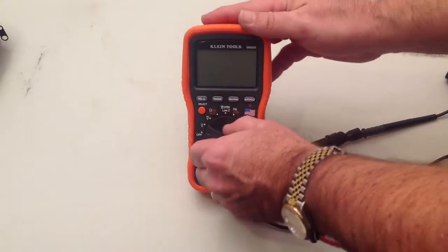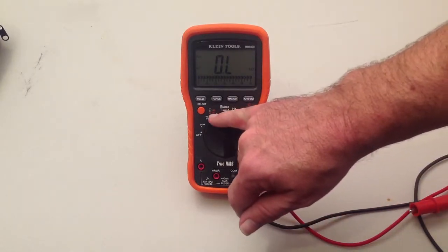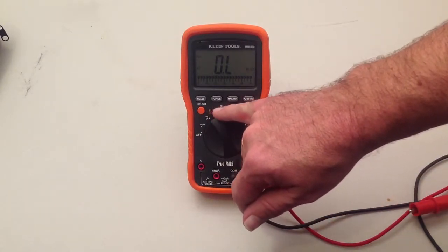So when we do a diode test, let's first turn the meter to the diode position, and notice that this position has diode, capacitance, resistance, and continuity.